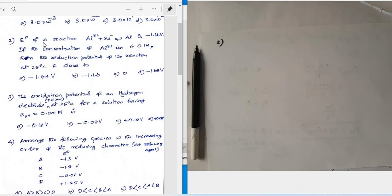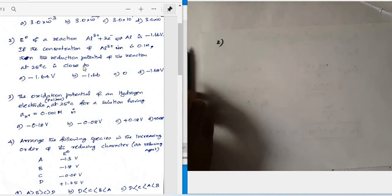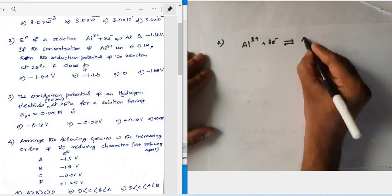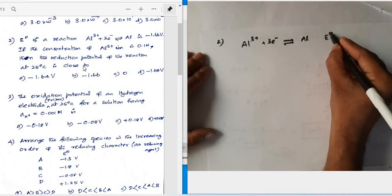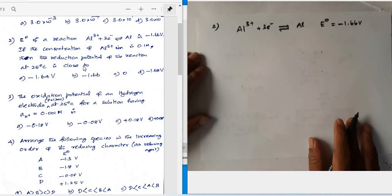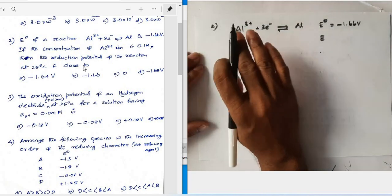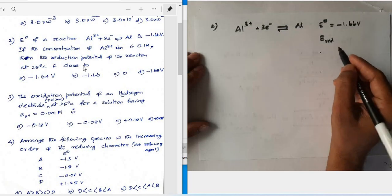Question number two: the standard potential E⁰ for the reduction reaction Al³⁺ + 3e⁻ → Al is given as −1.66 V. If the concentration of aluminum ion is 0.1 mol/L, we need to find the reduction potential of the reaction at 25°C.